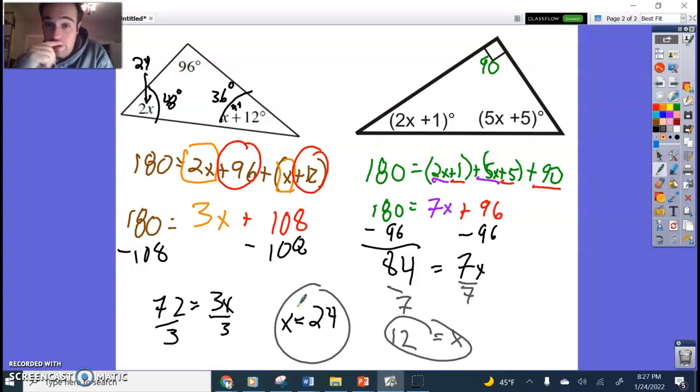If I really want to find the angles, if I need to for some reason, I take that 12 and I just plug it in. 2 times 12 is 24 plus 1. This whole thing should be 25 degrees. This whole thing here, I plug in 12. 12 times 5 is 60, plus 5 is 65 degrees, if I really need it to find the angles for whatever reason. That should be all you need for triangle sum theorem. Let's attack this in class. Give it a shot.